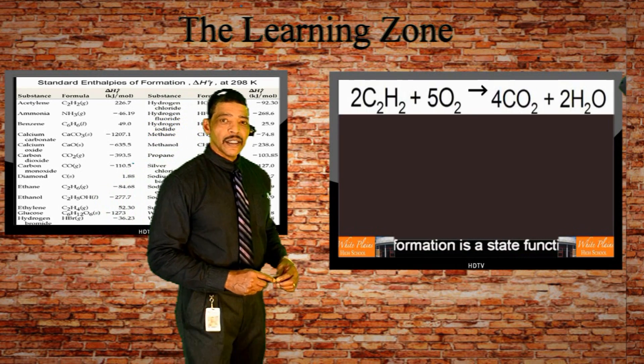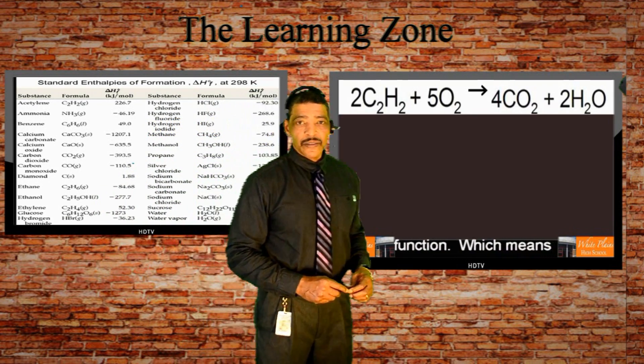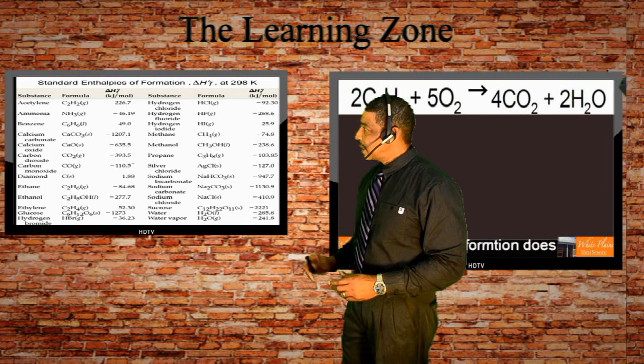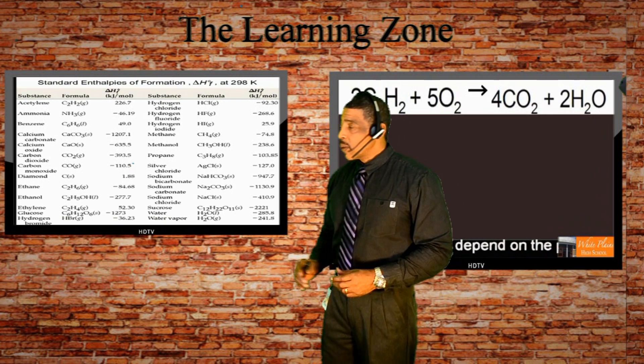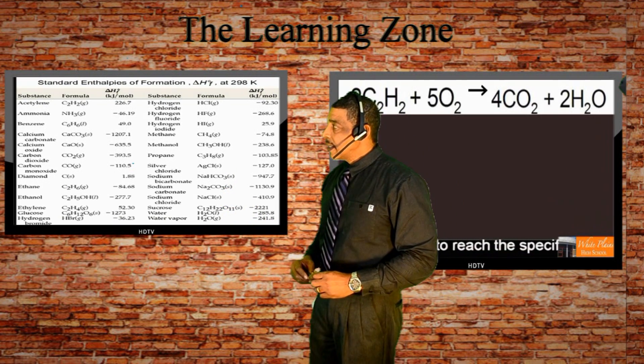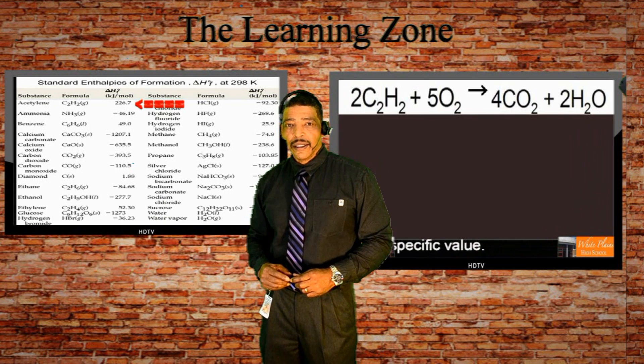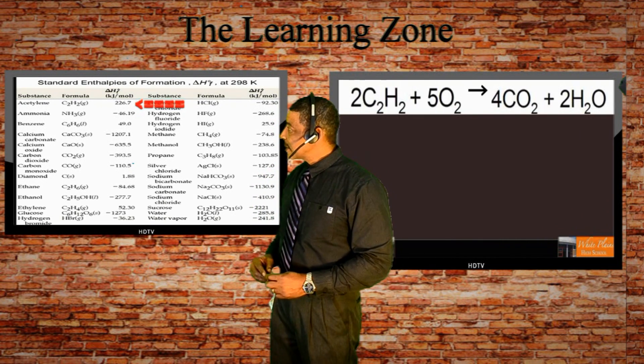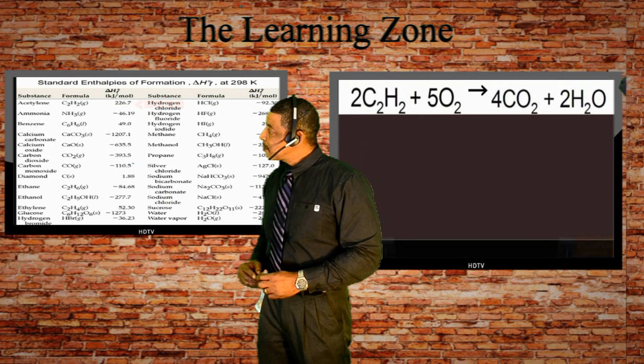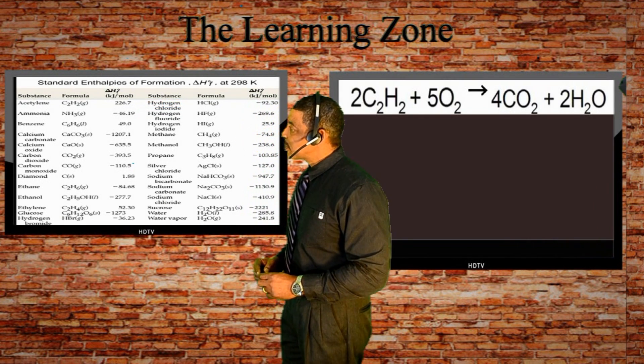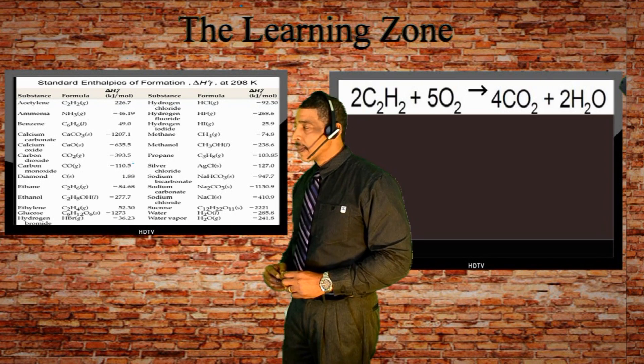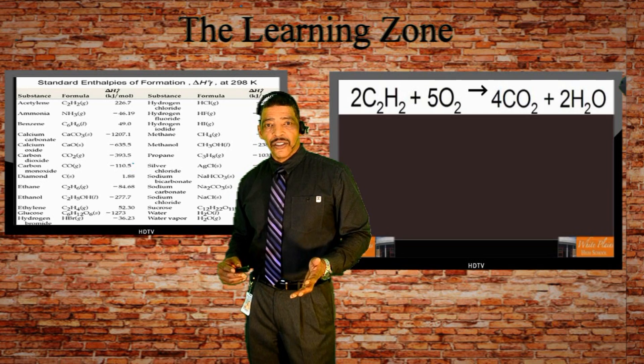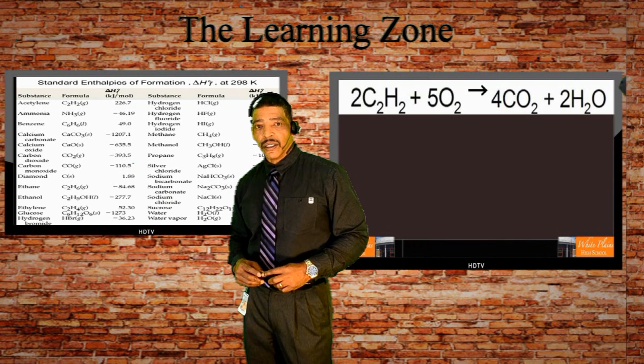To determine the heat of reaction for the combustion of ethyne we may refer to a heat of formation table. According to the heat of formation table, the formation of ethyne is an endothermic process where the heat of formation is listed at a positive 226.7 kJ per mole. The heat of formation of oxygen is 0.0 kJ per mole.